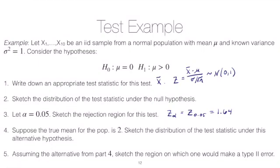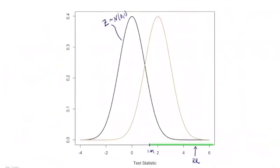Now, assuming the alternative from part 4, so assuming that the mean is actually 2, let's sketch the region on which one would make a type 2 error. So remember, type 2 errors are made under the assumption of some alternative, in this case, mu equal to 2. So we would calculate the probability of a type 2 error using the gold curve and not the black curve.